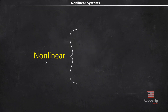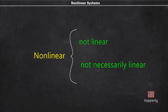The adjective non-linear can be interpreted in two different ways: not linear, and not necessarily linear. In the control system sense, the second interpretation — not necessarily linear — is intended.